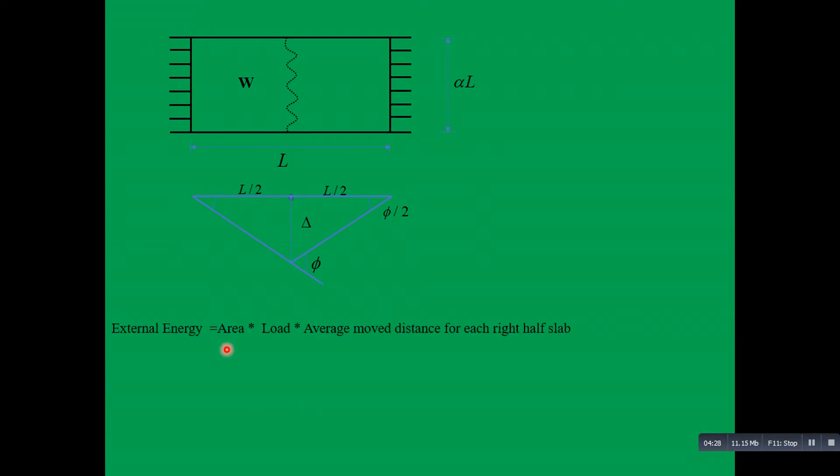Now proceeding to determine the external energy. We'll first calculate the area of half of the slab, the average move distance or deflection contributed by half of the slab, and multiply that by 2. The area is alpha L multiplied by L over 2. The load is W. In case of a rectangular slab, each half slab contributes a deflection of delta over 2. If total deflection is delta, each slab portion will contribute delta over 2, and we will multiply by 2 to determine the total external energy.